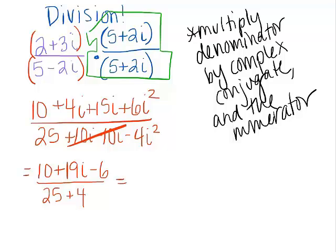So now, let's see, we have 10 minus 6 is 4, and then we have plus 19i in the numerator, all over 29. This counts as a completed division problem because notice there's no more complex number in the denominator. It's just that real number 29. So we're technically done.